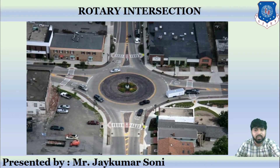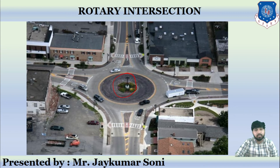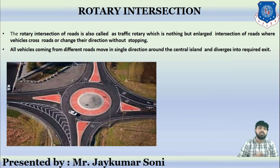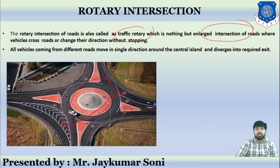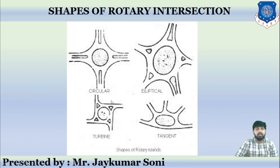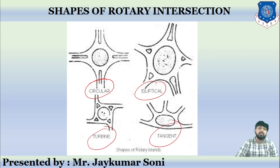Next comes the rotary intersection. You have already learned about the basics — examples include Darpan Circle and Navarankura Circle. A rotary intersection, also called a traffic rotary, is an enlarged intersection where vehicles cross roads or change direction without stopping. All vehicles coming from different roads move in a single direction around the central island and diverge to the required exit. Various shapes are possible: circular, elliptical, turbine-shaped, or tangent-shaped.